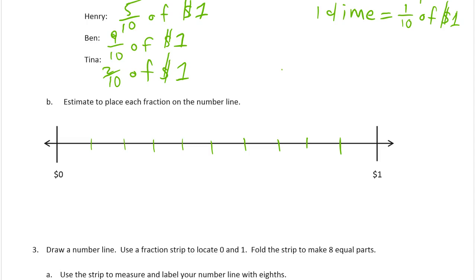Henry has 5 tenths, so that's 1, 2, 3, 4, 5. Henry is 5 tenths. I'll put an H up here for Henry. And then Ben has 9 tenths, that's this one right here. 1, 2, 3, 4, 5, 6, 7, 8, 9, yep, 9 tenths. That's Ben, label him with a B. And Tina is 2, so that's 1, 2. Here's Tina, 2 tenths.